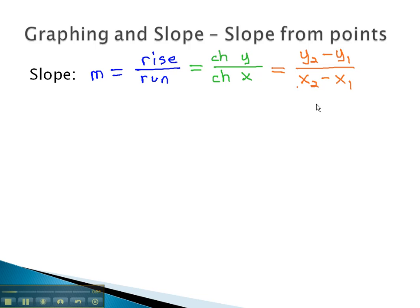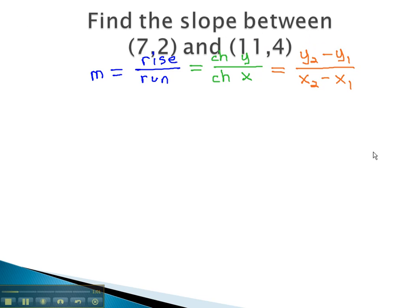Let's take a look at how we can use this formula, y2 minus y1 over x2 minus x1, to find the slope between two points.